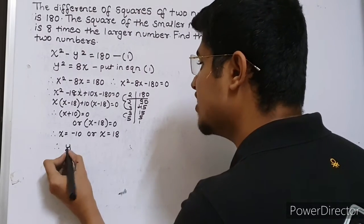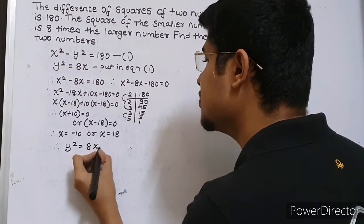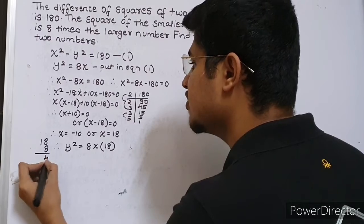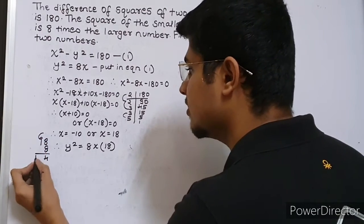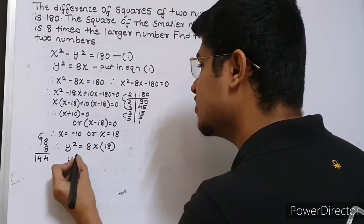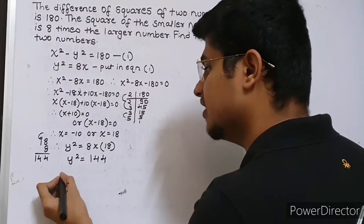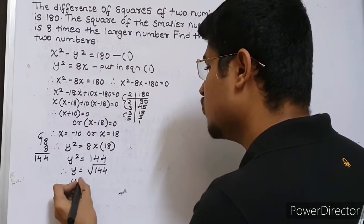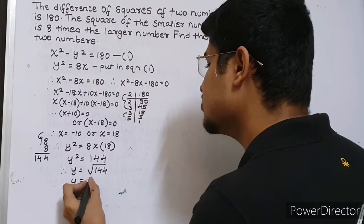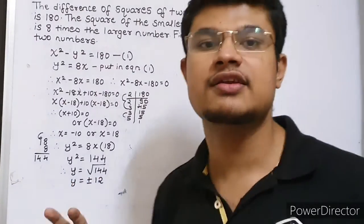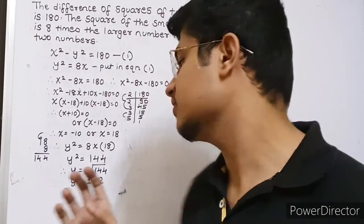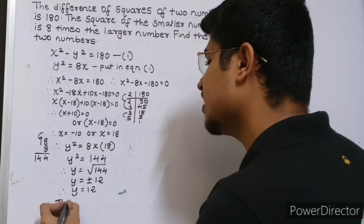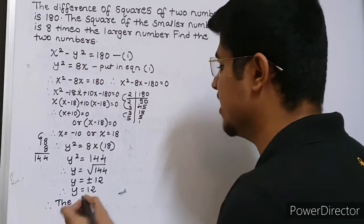So I will proceed with x equal to 18. Therefore y squared is equal to 8 into 18, which is 144. Therefore y is equal to the square root of 144. That gives plus or minus 12, but I will consider y as positive, that is 12. Therefore y is equal to 12. Therefore the required numbers are 18 and 12.